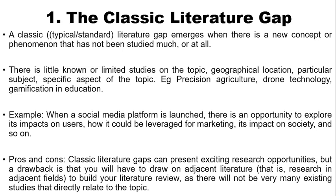An example of a classic literature gap is when a new social media platform is launched. There is an opportunity to explore its impact on users, how it could be leveraged for marketing, its impact on society, and so on. You cannot conduct research on the impact of such a platform until after some time — and that gap is a classic literature gap because no one has done it yet, there is no study on it. The advantage is that it can present existing research opportunities, but the drawback is that you will have to draw on adjacent literature to build your literature review.